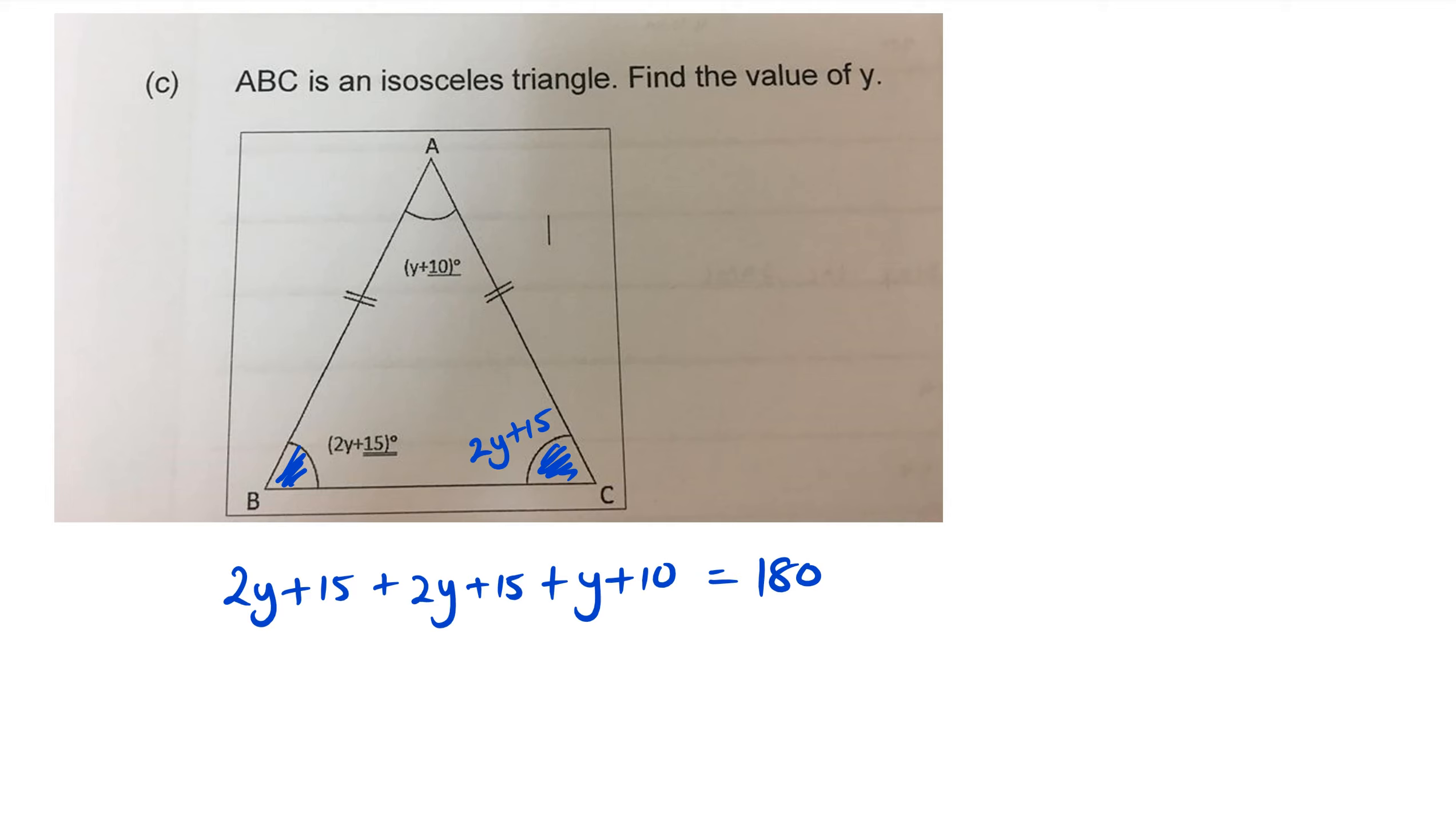So simplifying this, we've got 2y, 2y, and y which equals 5y, and then 15, 15 which is 30, and 10 which equals 40, then all of this is equal to 180 degrees.